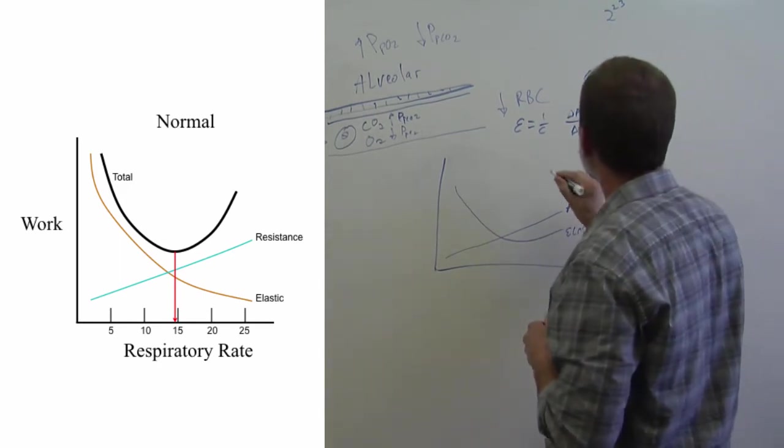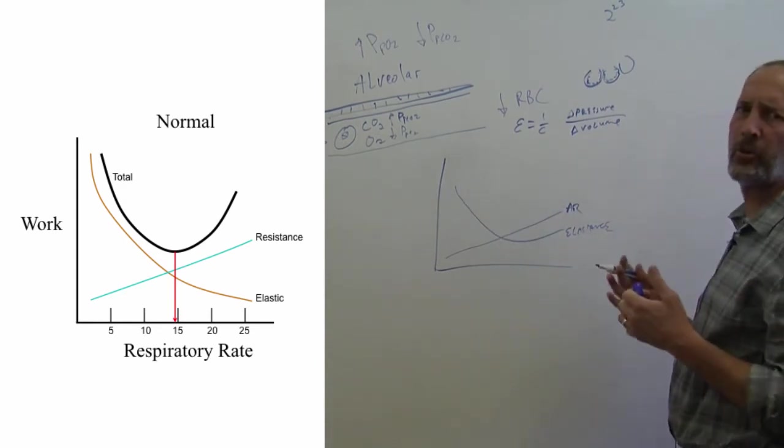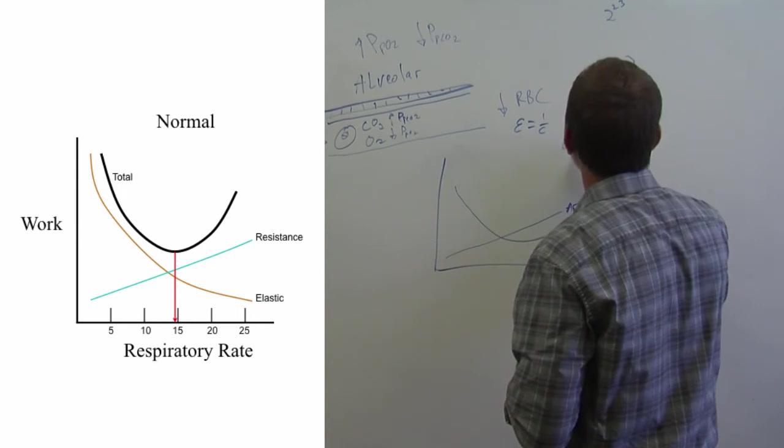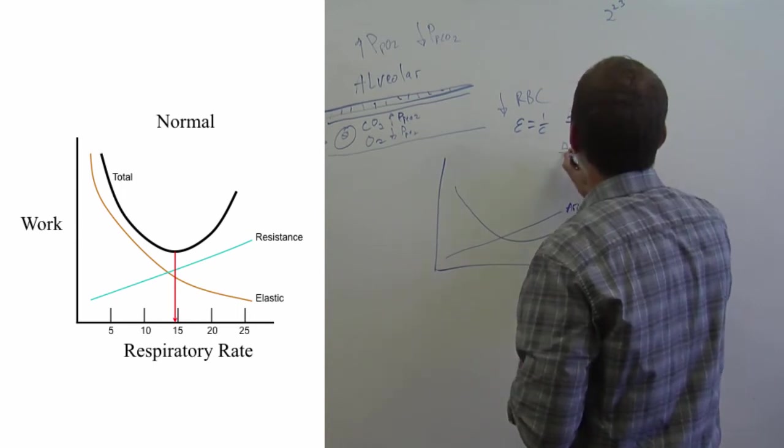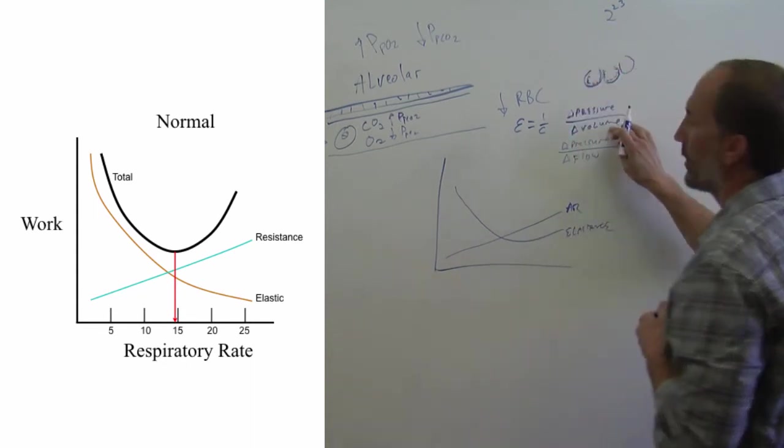And then there's airways resistance. And airways resistance is basically elastance per unit time. So it's the pressure required to give a given flow, or volume per unit time.